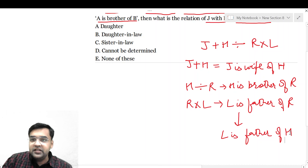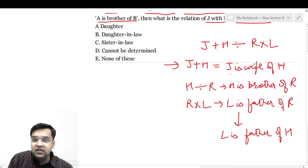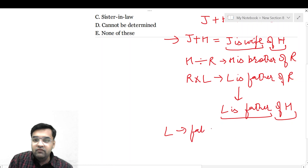तो L अगर H का father है, और J कौन है — J है H की wife, J is wife of H, and L is father of H — तो L और J में क्या relation हुआ: L becomes the father-in-law of J।